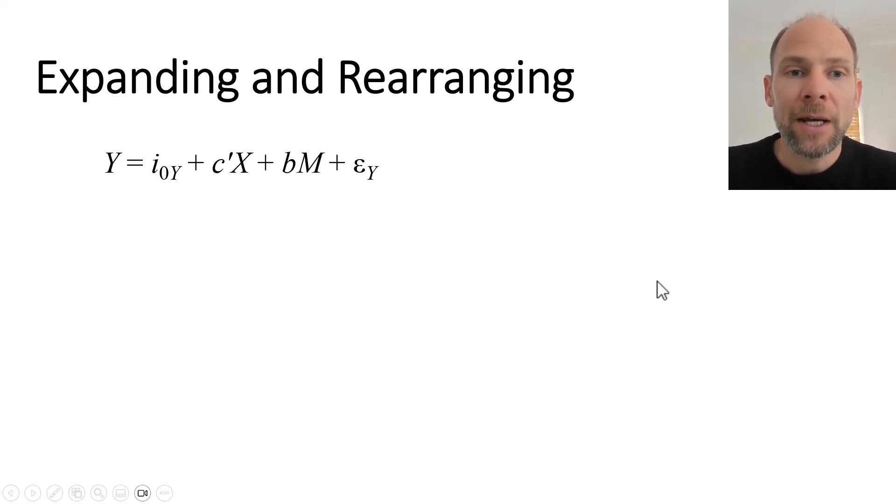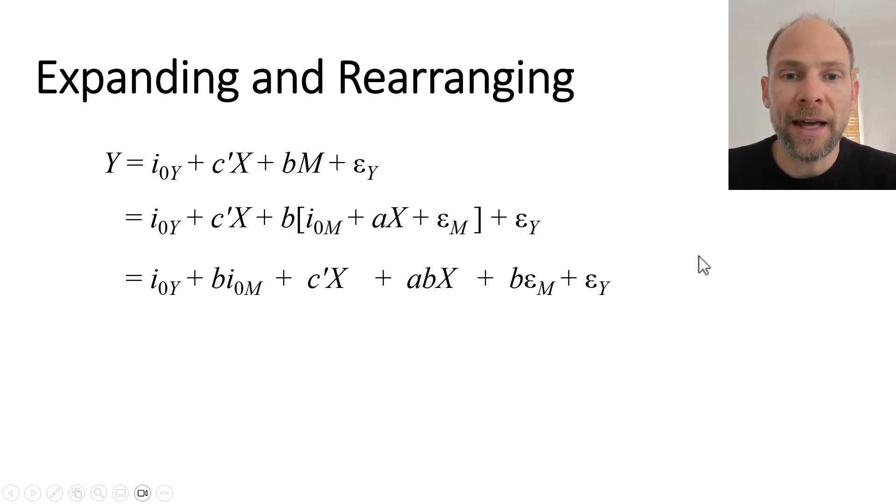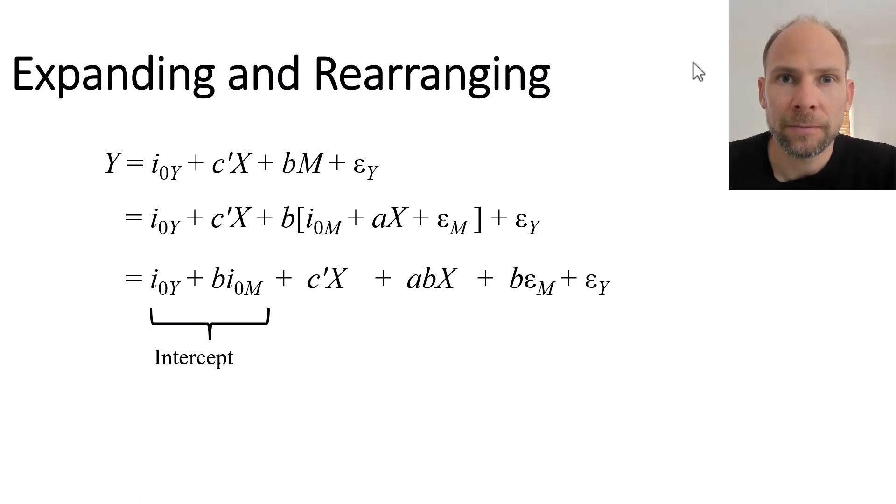When we expand and rearrange it we have a complex intercept consisting of two components, the intercept for Y plus b times the intercept for M. Furthermore we have the direct effect c' of X on Y and we have the indirect effect a times b of X on Y.